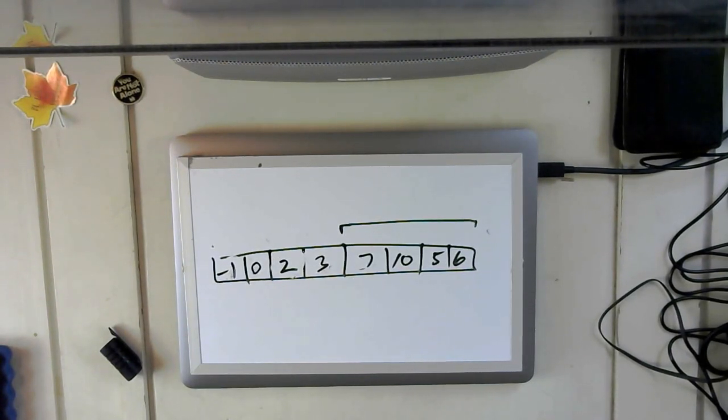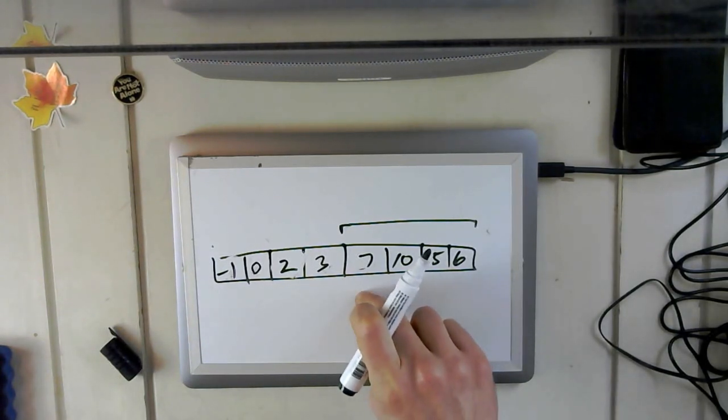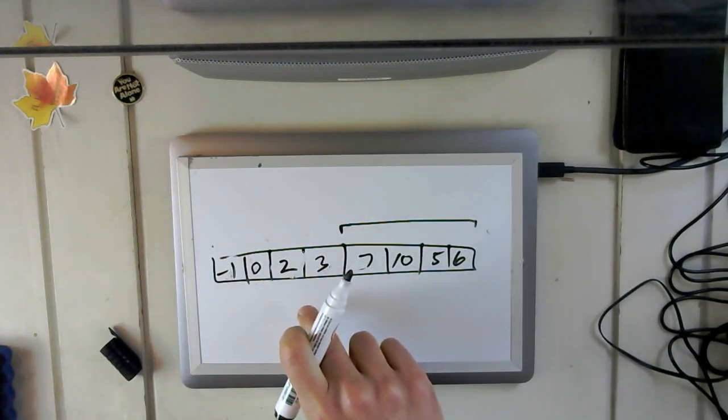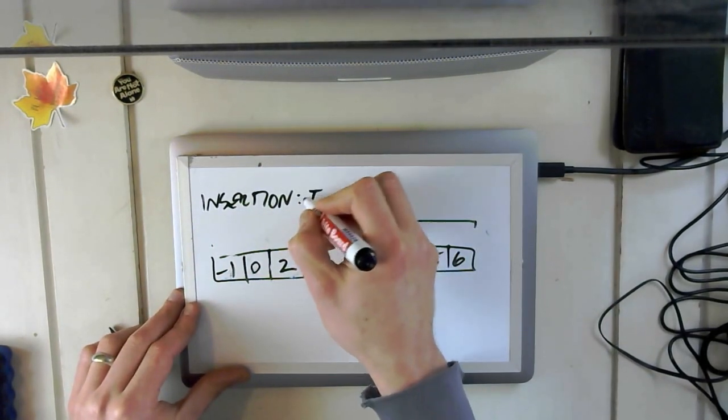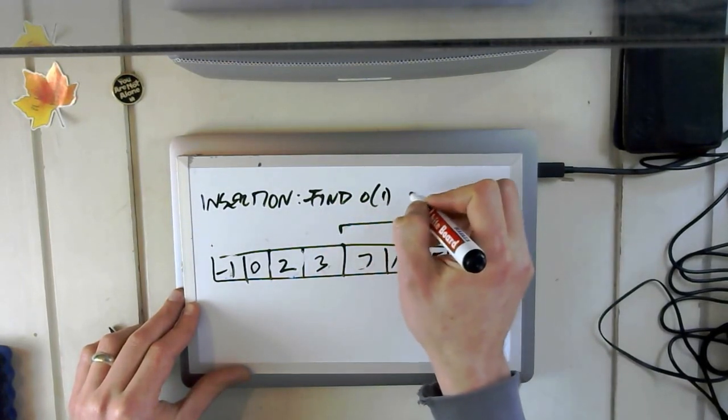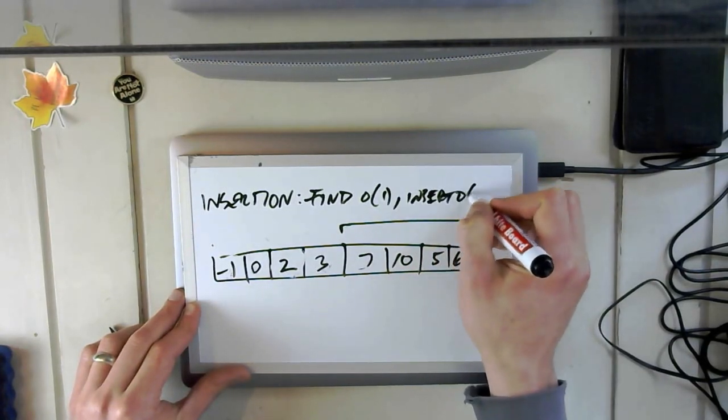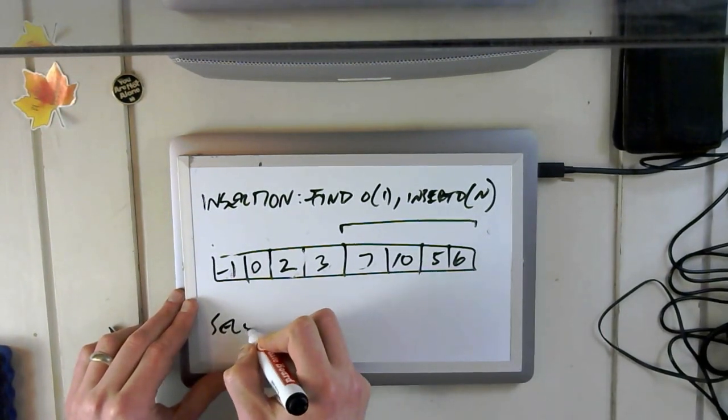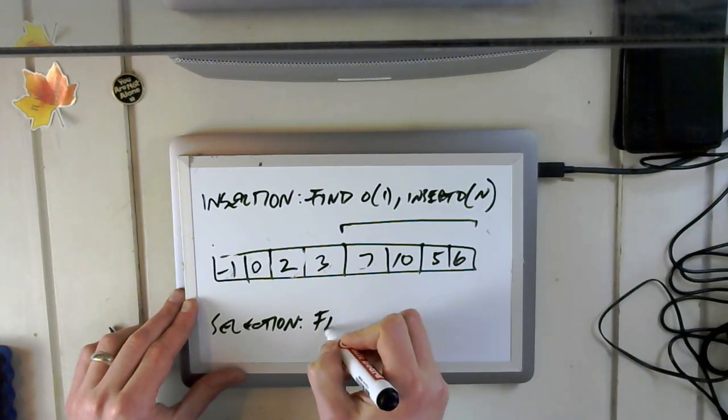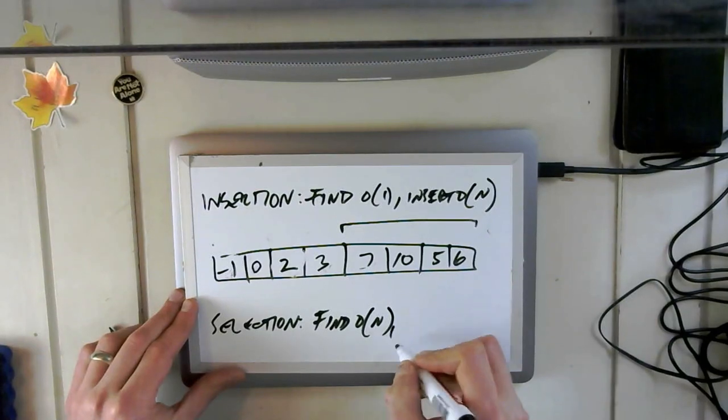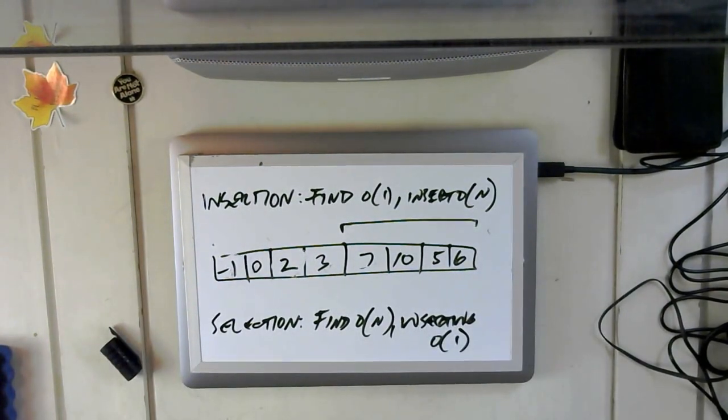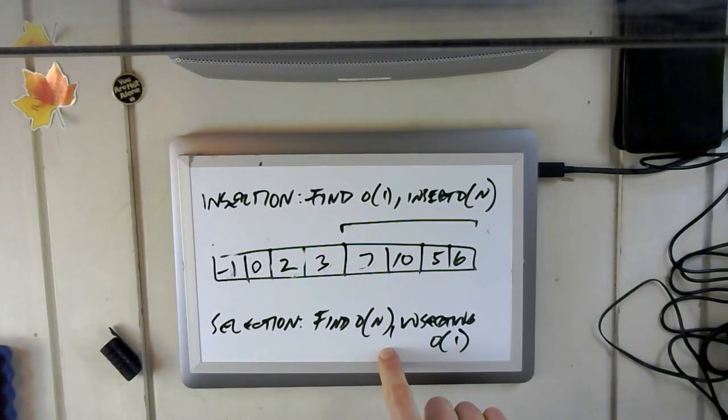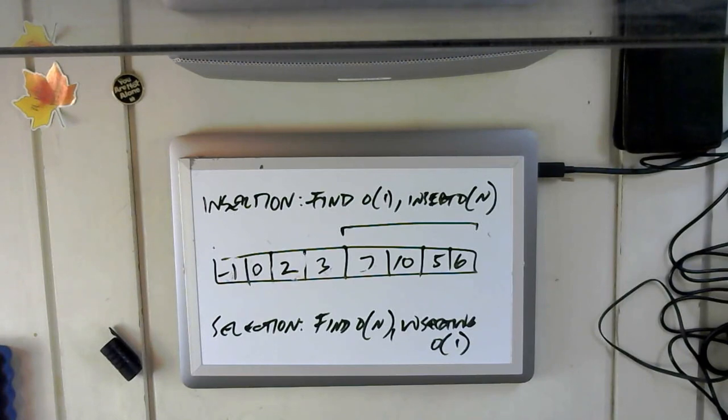So insertion sort, finding the value is constant time because I always pick the value at the leftmost part of the unsorted portion. Inserting it is O(n), right? So it's kind of like insertion. Let's write this down. Insertion. This is why I don't do whiteboard stuff because my handwriting is terrible. Find is O(1), insert is O(n). This is probably helping nobody. Selection, finding is O(n). Because I have to find the minimum or the maximum, depending on how I'm doing it. And inserting is O(1). And so there's kind of a nice parallel between these two. In insertion, I do the work inserting the value to figure out where it goes. In selection, I do the work finding the value. I find a value with a specific property, namely that it's the minimum value. And then I know exactly where it goes in the sorted part of the array.